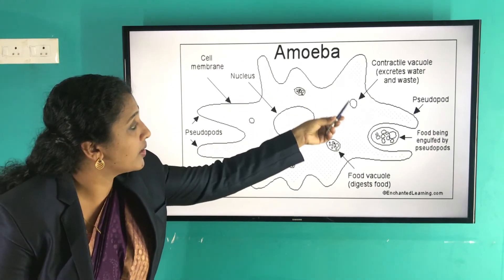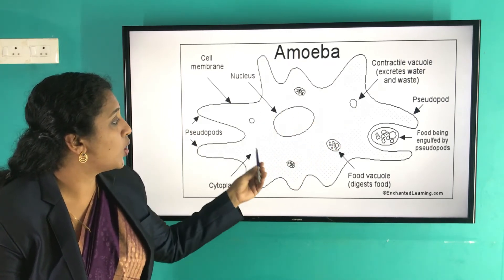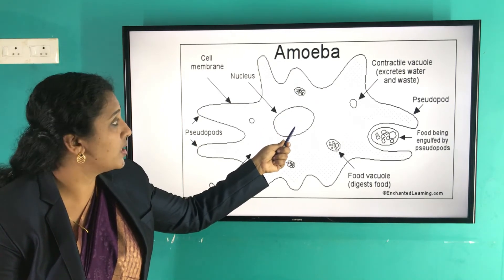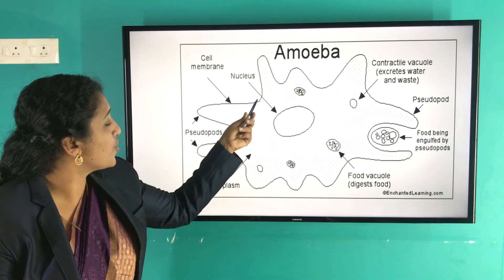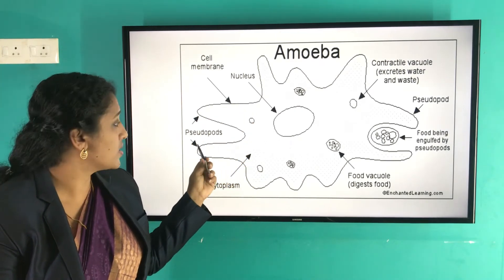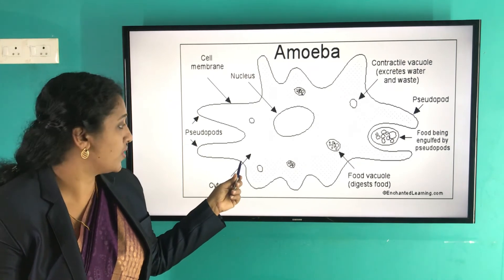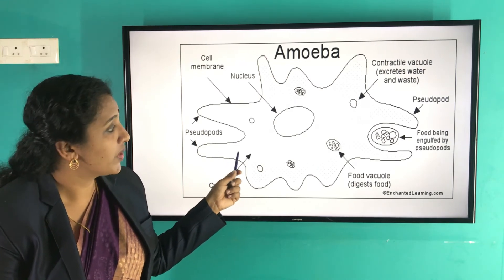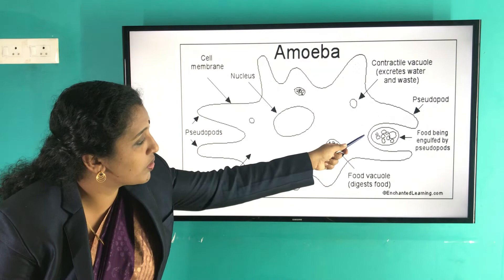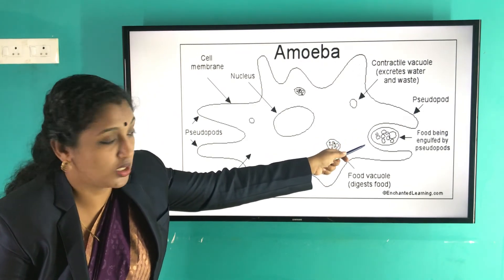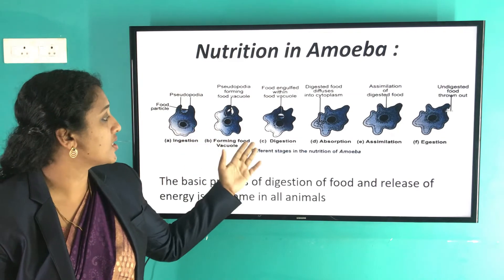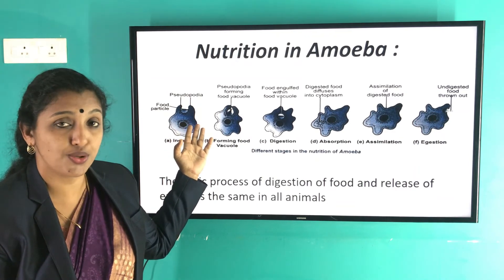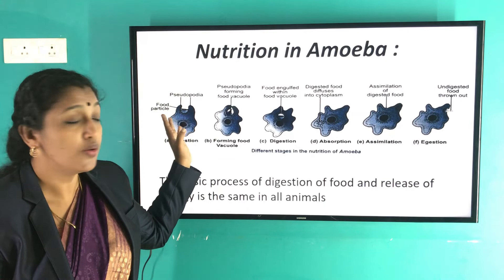In the structure of amoeba, the outermost layer is the cell membrane, inside which is the cytoplasm, and the larger structure is the nucleus. The finger-like projections are known as pseudopodia, which help in locomotion and engulfing food particles. From the picture, you can understand the different stages of nutrition in amoeba — first, amoeba produces pseudopodia to engulf the food particle.